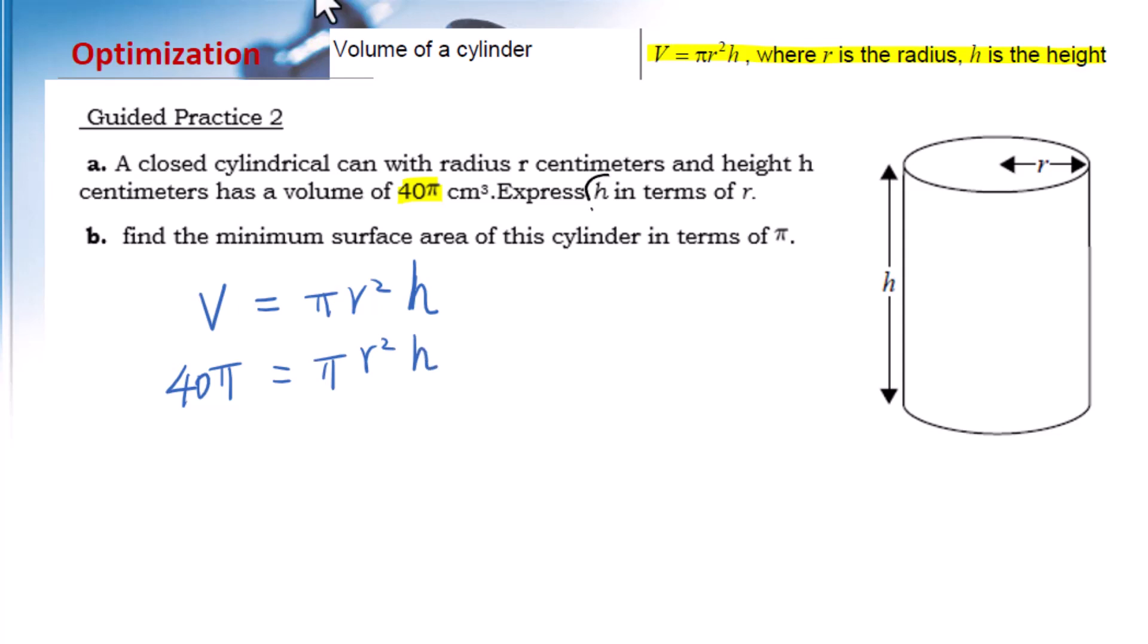Since I'm looking for h, we need to solve for h in this equation by dividing πr² on both sides. h equals 40 over r².